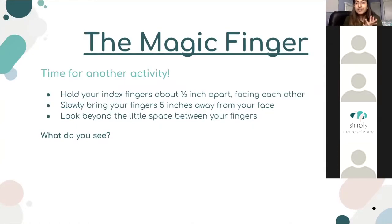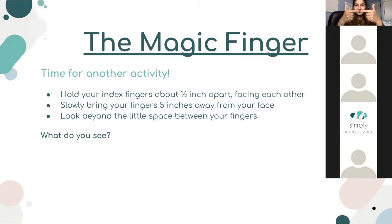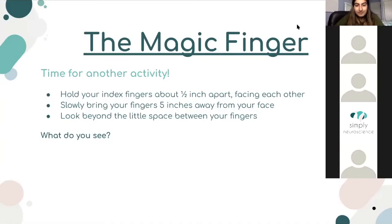We're going to do a really fun activity. Hold your fingers about half an inch apart, slowly bring your fingers away from your face — about this far — and then look beyond that little space. What you should start to see is a magic third finger in between. Give it a shot and let us know if you can see it in the chat. Was anyone able to do it? I was definitely able to. It's pretty cool.